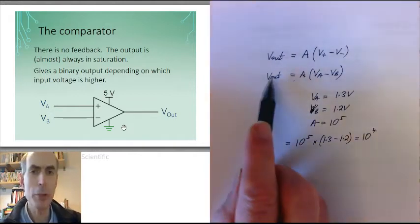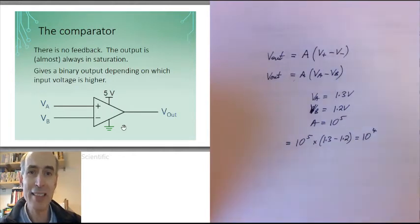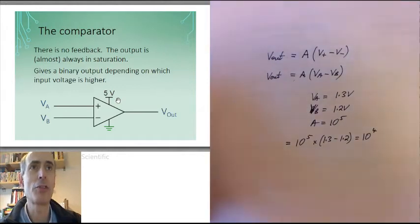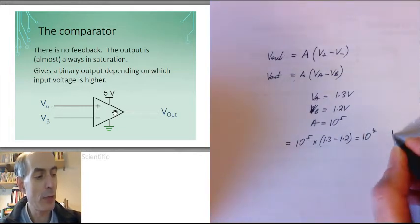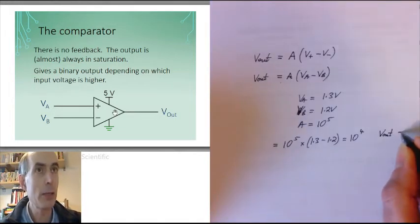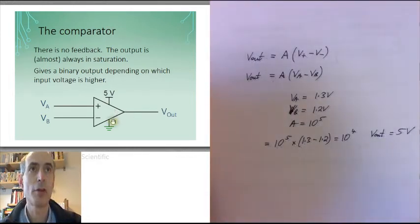Well, the output of this op-amp cannot get to 10,000 volts, so it does the best it can, and it goes up to its positive rail, assuming that is that this op-amp does have rail-to-rail output. That would mean that, in this case, the Vout of our op-amp would actually be 5 volts.